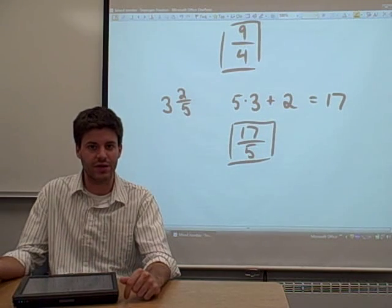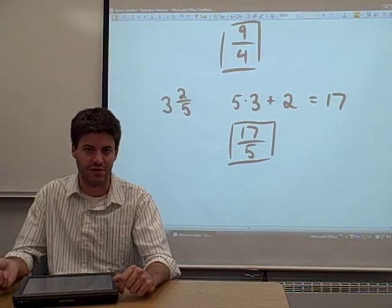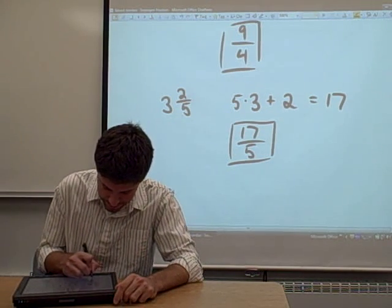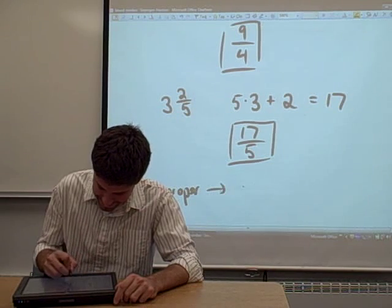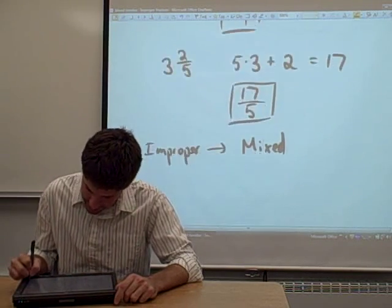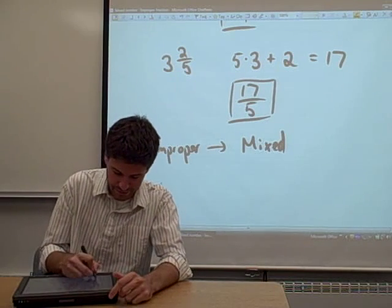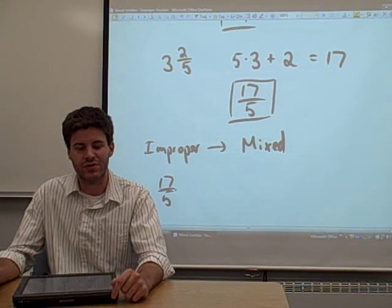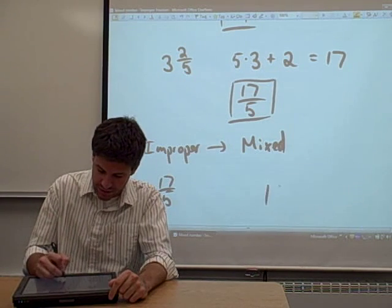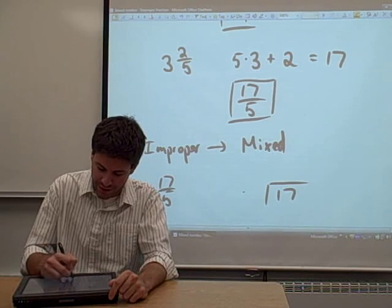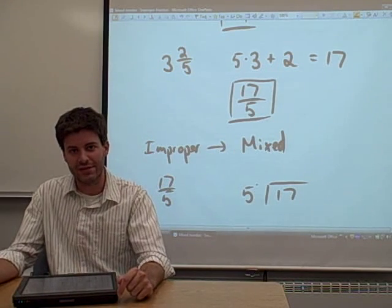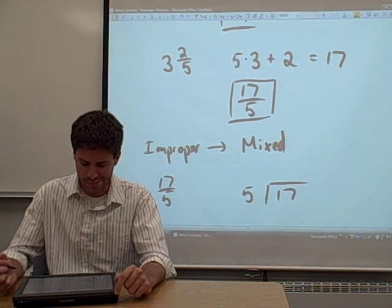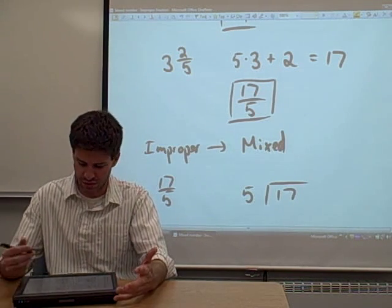So let's try to do it the other way around. Let's try to take an improper fraction and convert it back to a mixed number. Let's give it a shot with 17 fifths. The way that you do this is you use long division. You throw the numerator inside your division sign and put the denominator outside the division sign, and then you just do the long division like you normally would.